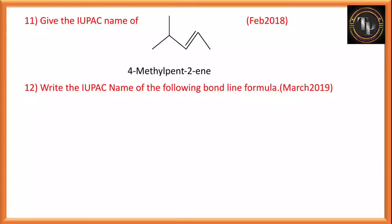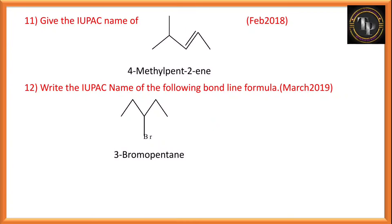Write the IUPAC name of the following bond line formula. Numbering from the left: bromine is at third position. Numbering from the right: bromine is also at third position. Total carbon atoms: five. So the name is 3-bromopentane. If you are not understanding how to write bond line formula IUPAC names, comment below and I will make a video on that in upcoming days, so you can answer easily in board and CT examinations.